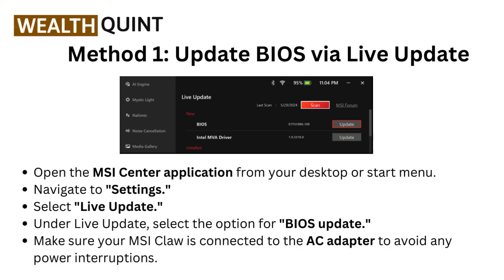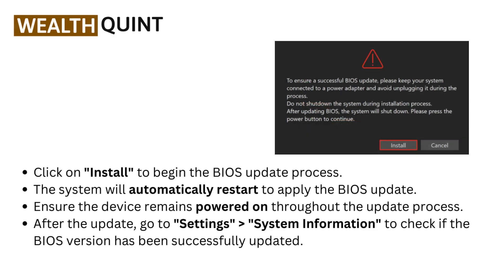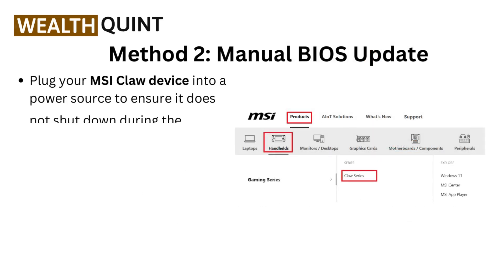Make sure your MSI CLAW is connected to the AC adapter to avoid any power interruptions. Now click on Install to begin the BIOS update process. The system will automatically restart to apply the BIOS update. Ensure the device remains powered on throughout the update process. After the update, go to Settings, then System Information to check if the BIOS version has been successfully updated.